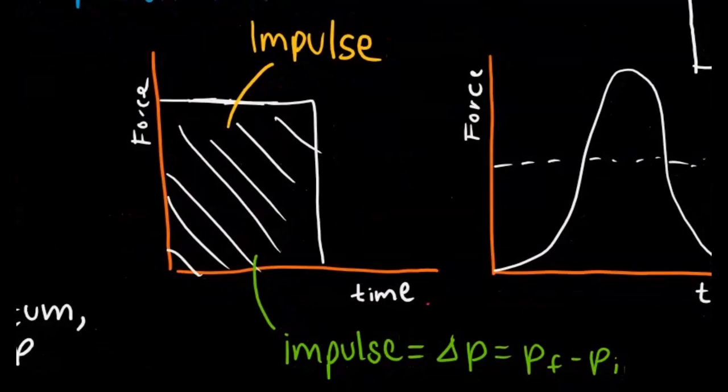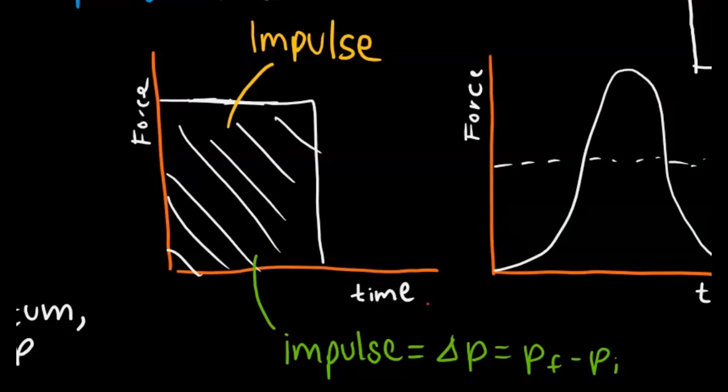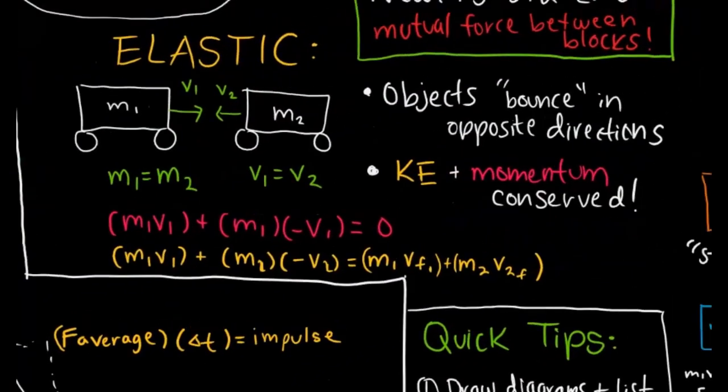M times change in V is also just change in momentum, so change in momentum equals Ft, which is equivalent to impulse. Here you can see on our impulse graph, it's force times time. The area under the curve represents the impulse, which is change in momentum, which is final momentum minus initial momentum.